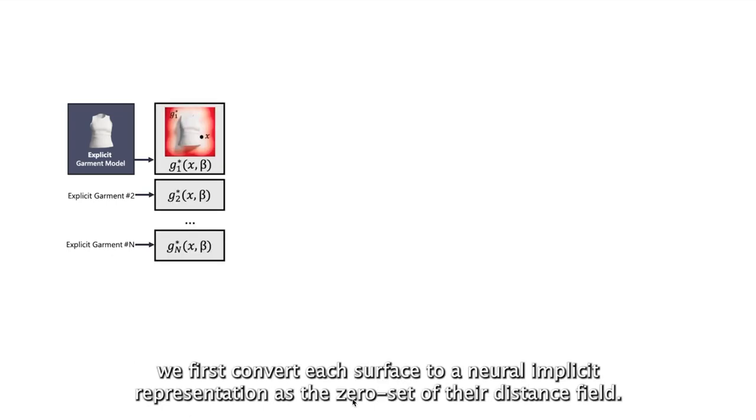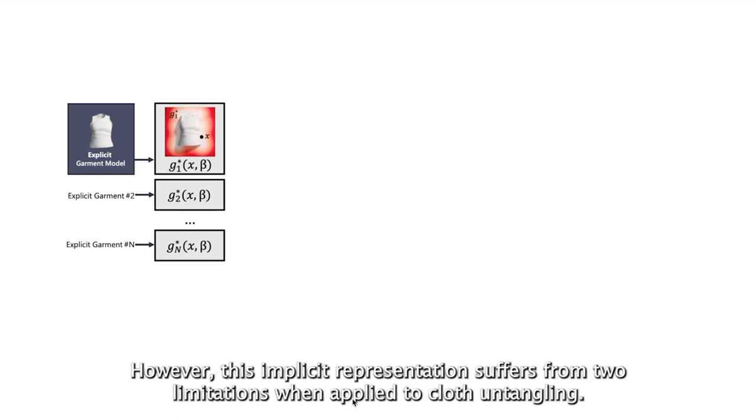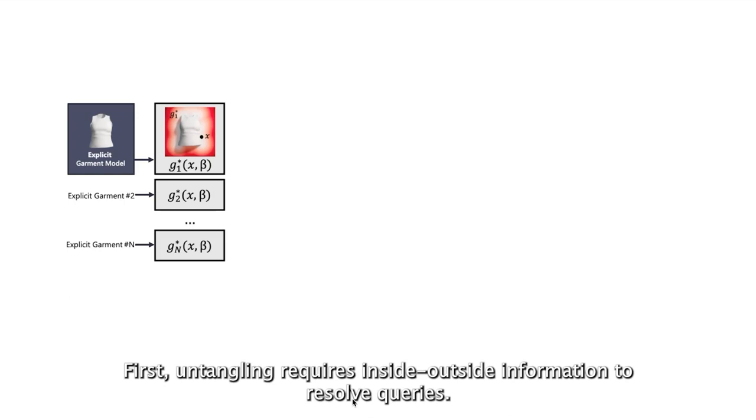Starting from a set of explicit garment models potentially untangled when worn together, we first convert each surface to a neural implicit representation as a zero set of their distance. However, these implicit representations suffer from two limitations when applied to cloth untangling.